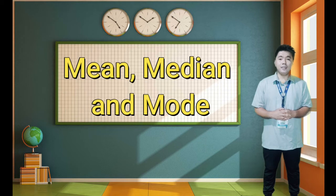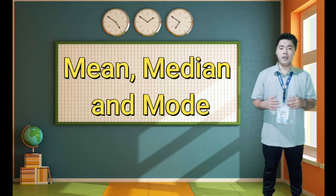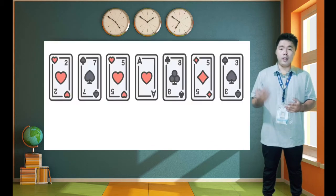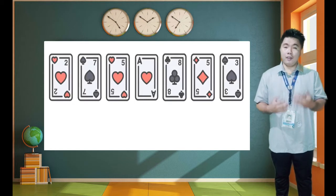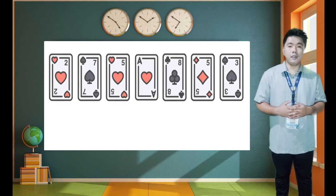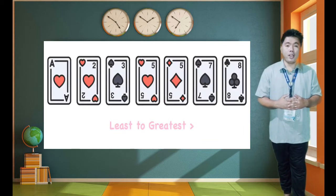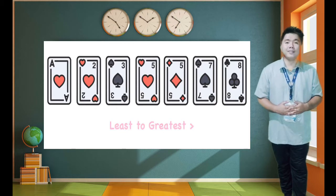Let's have a review on our lesson about the mean, median, and mode. Given a standard deck of cards, let's draw 7 random cards. After drawing 7 random cards, remember that we need to arrange those cards from smallest to largest.